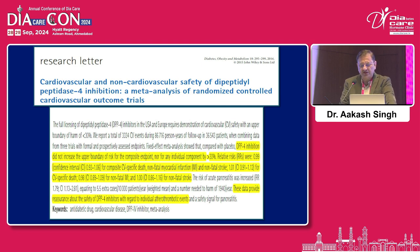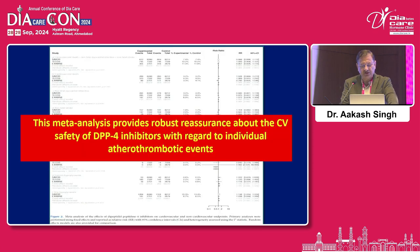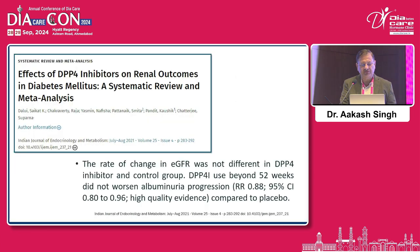This meta-analysis showed that DPP-4 inhibition did not increase the upper boundary of risk for composite endpoints, nor for any individual component by more than 30%. Relative risk was 0.99, with the confidence interval for composite CV outcomes — CV death, non-fatal MI, non-fatal stroke — demonstrating that this drug class is safe. This meta-analysis provides robust reassurance about the CV-safety of DPP-4 inhibitors with regards to individual atherosclerotic events.